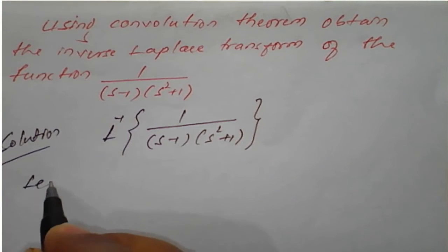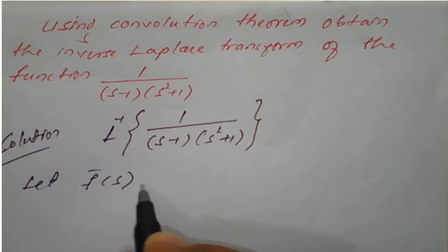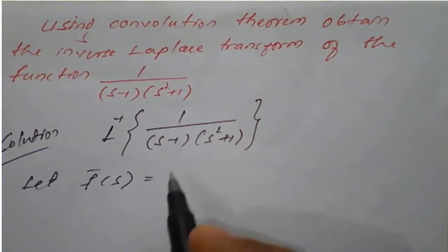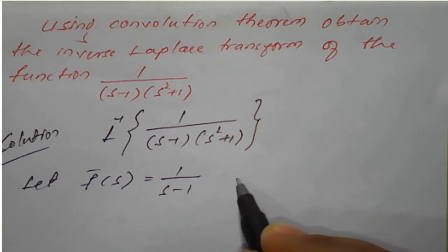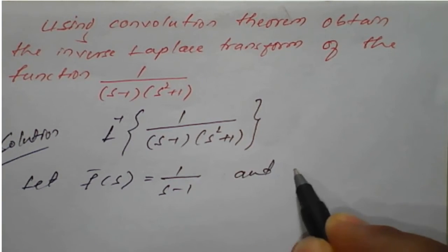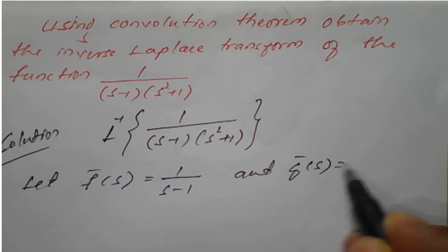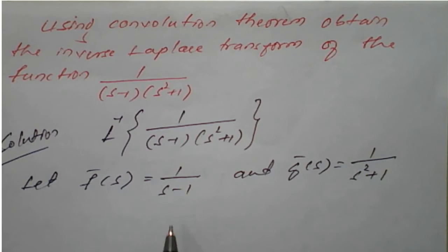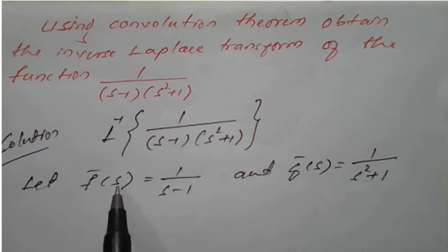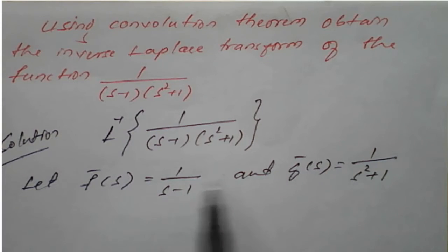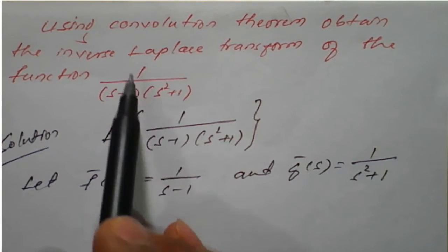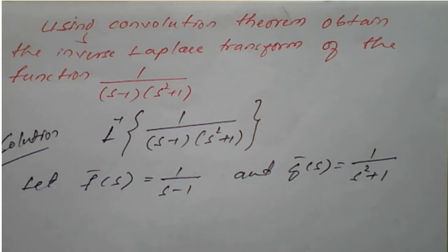We consider f'(s) equal to 1 upon (s minus 1) as the first function, and g'(s) equal to 1 upon (s squared plus 1) as the second function. Notice that when we multiply f'(s) into g'(s), we get back 1 upon (s minus 1)(s squared plus 1), which is our given question.